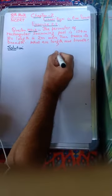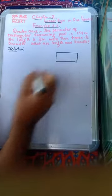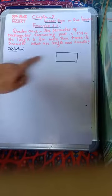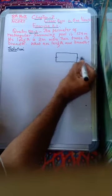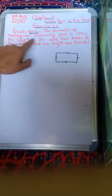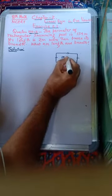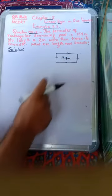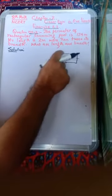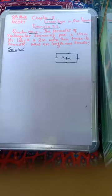Rectangle में क्या होता है — rectangle में opposite sides are equal. So for example, this is a rectangular swimming pool. This side is equivalent to this side, and this side is equal to this side. The perimeter of the rectangular swimming pool is 154 meters. Perimeter का मतलब होता है sum of all sides — इन सभी sides को add करके जो length आती है, that is 154 meters. So perimeter is the sum of the lengths of all the sides.